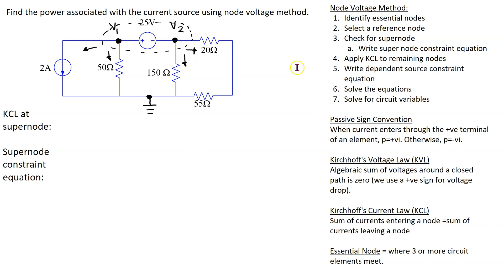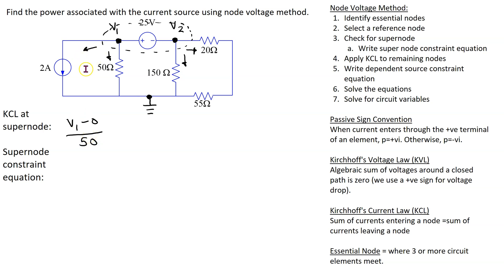Let's apply Kirchhoff's current law to the super node. The branch current through the 50 ohm resistor is v1 minus 0 over 50. In this branch there is an independent current source, so this branch current must equal the current source. Since the branch current direction is the same as the current source direction, we get plus two.